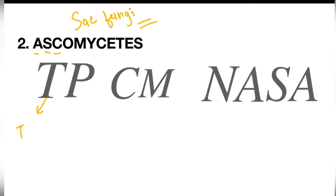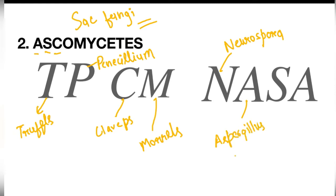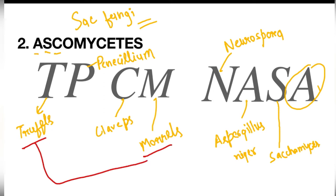In the trick TPCM NASA: T is Truffles, P is Penicillium, C is Claviceps, M is Morals (Morels), N is Neurospora, A is Aspergillus niger, S is Saccharomycetes, and the final A is Ascomycetes. Morals and Truffles are the edible fungi in the class Ascomycetes.